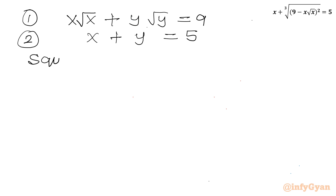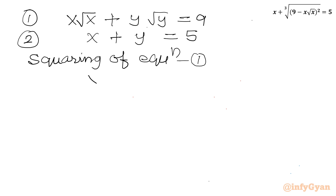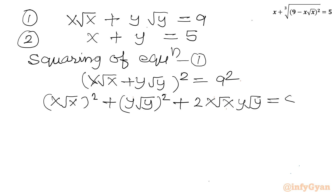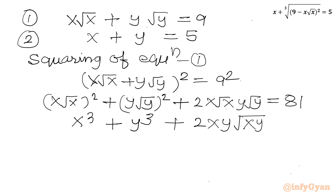I will consider squaring equation 1: x root x plus y root y, whole square, equals 9 squared. Applying the A plus B whole square identity — A squared plus B squared plus 2AB — equals 81. So x cubed plus y cubed plus 2xy root xy equals 81. Let us call this equation 3.